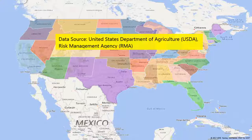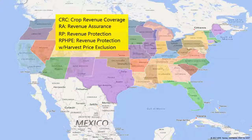This presentation focuses on indemnities from revenue-based products available during the 2001–2015 study period. These products include CRC, or Crop Revenue Coverage; RA, or Revenue Assurance; RP, or Revenue Protection; and RPHPE, or Revenue Protection with Harvest Price Exclusion.